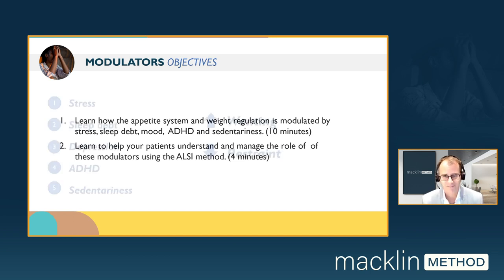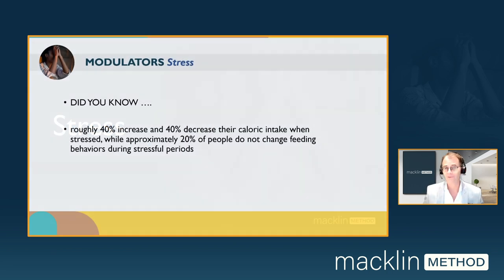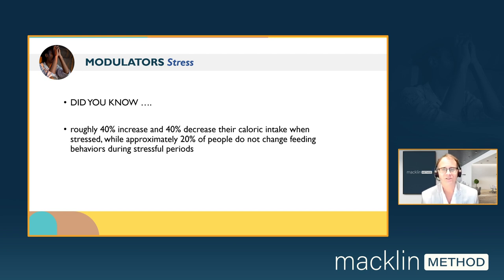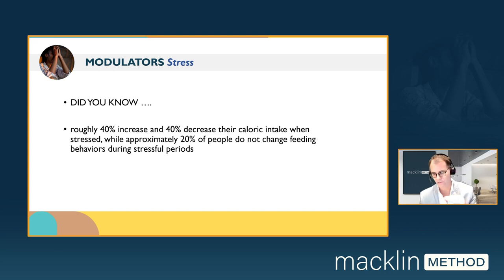Let's start with stress. Did you know that roughly 40% will see an increase and 40% will see a decrease in their calorie intake when stressed, and approximately 20% are in the middle? We see this variable response to stress, and potentially a phenotypical response that some individuals will have and some individuals won't have.